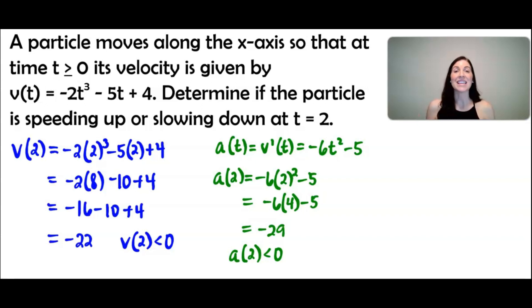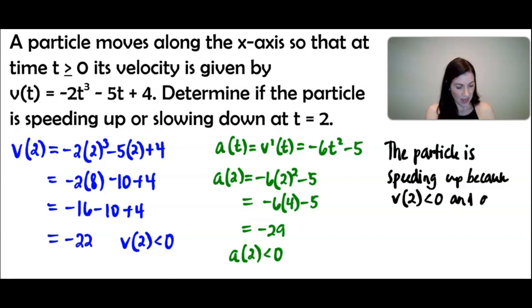Because both velocity and acceleration are negative, this is going to mean your particle is speeding up because they are both working in the negative direction or to the left when we're talking about a particle moving along the x-axis. So my answer is the particle is speeding up because v of 2 is less than 0 and a of 2 is less than 0, or they are both negative.